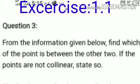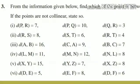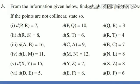Question number 3: from the information given below, find which of the points lies in between the other two. If the points are non-collinear, state so. That means you have to decide which point lies in between the two points. If the points are non-collinear, then state that the points are non-collinear. There are 6 questions, and in each question there are 3 points with the distances between each pair of points given.